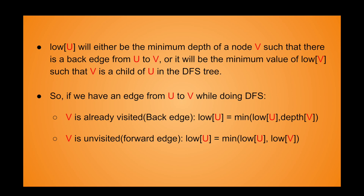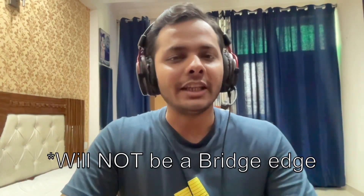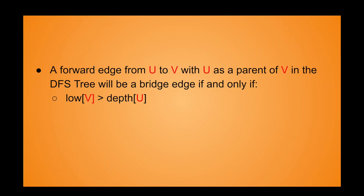While doing DFS from U, if we get to a node V which is already visited, then we have just encountered a back edge, so we can simply do low[U] = min(low[U], depth[V]). Otherwise, we are at a forward edge and we do low[U] = min(low[U], low[V]). Once both arrays are computed, an edge from U to V where U is the parent of V will be a bridge if and only if low[V] is greater than depth[U], because that is the only case where no back edge exists from the subtree of V up to U or some ancestor of U.